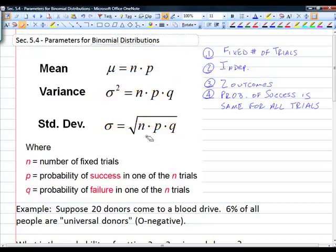The mean, remember, is an average value or the expected value. It's what we expect to happen. And the way that we find the mean is by looking at n times p. n is the number of trials times the probability of success.